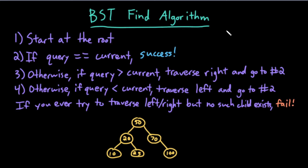The binary search tree find algorithm is very similar to the traditional binary search algorithm that we can do on sorted arrays. Basically, we start at the root, and if whatever query element we're looking for is equal to my current node, I've successfully found my node, so I would return true.